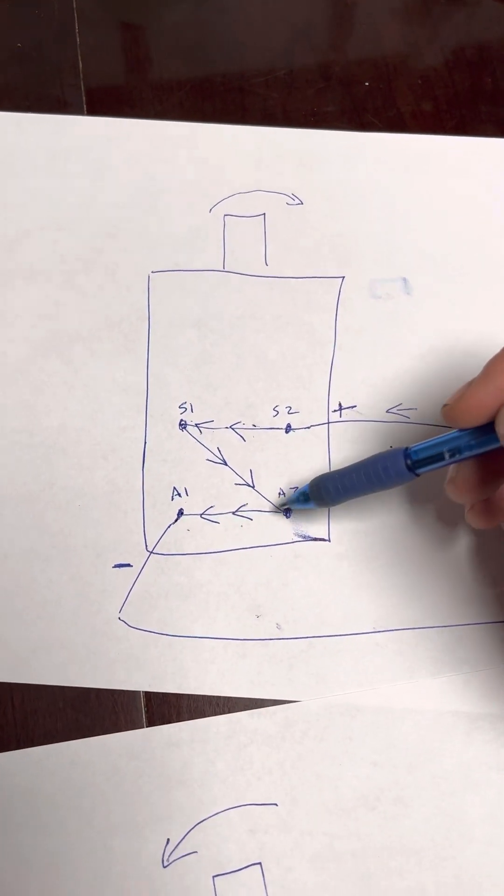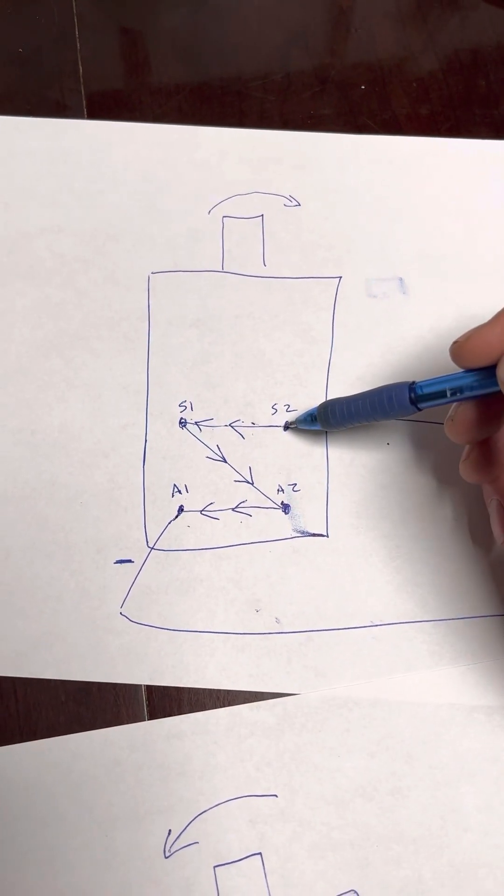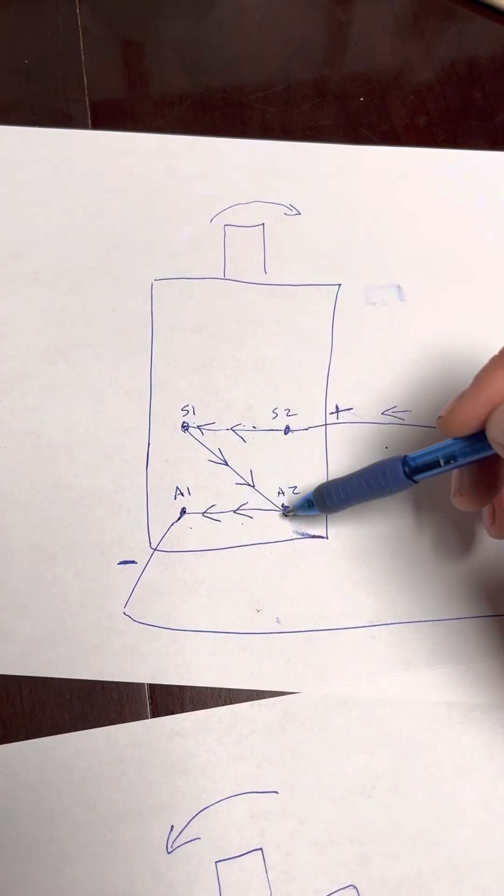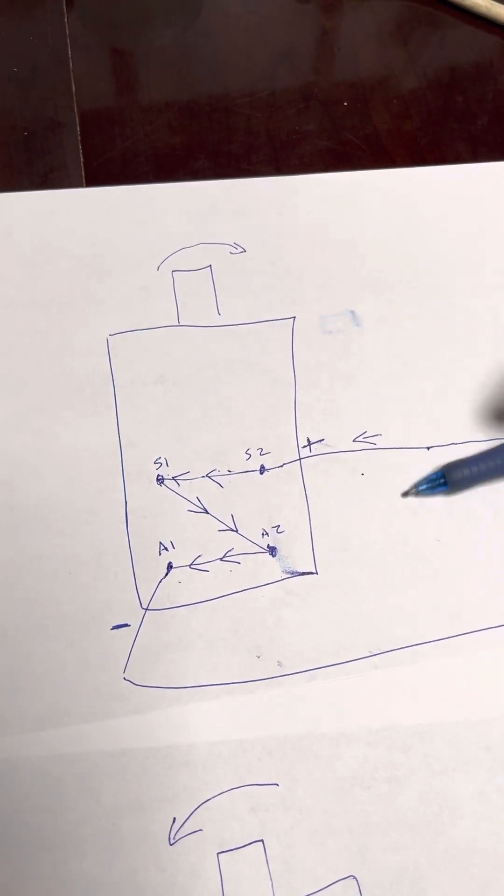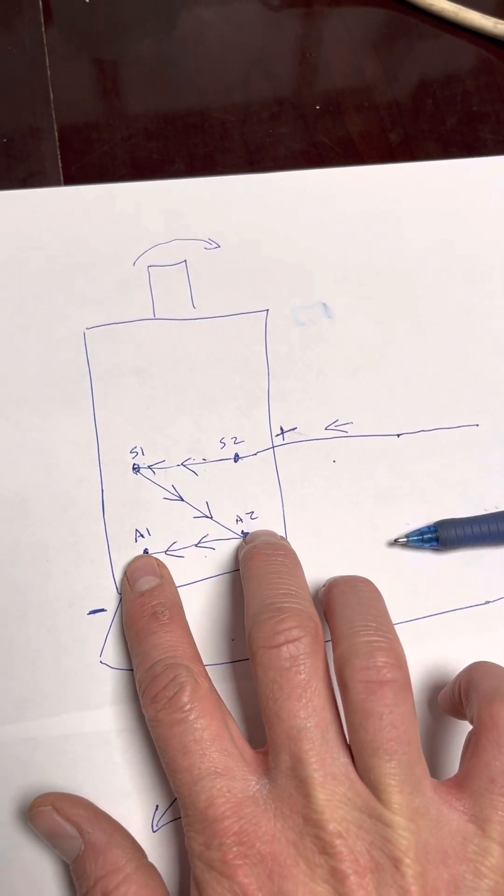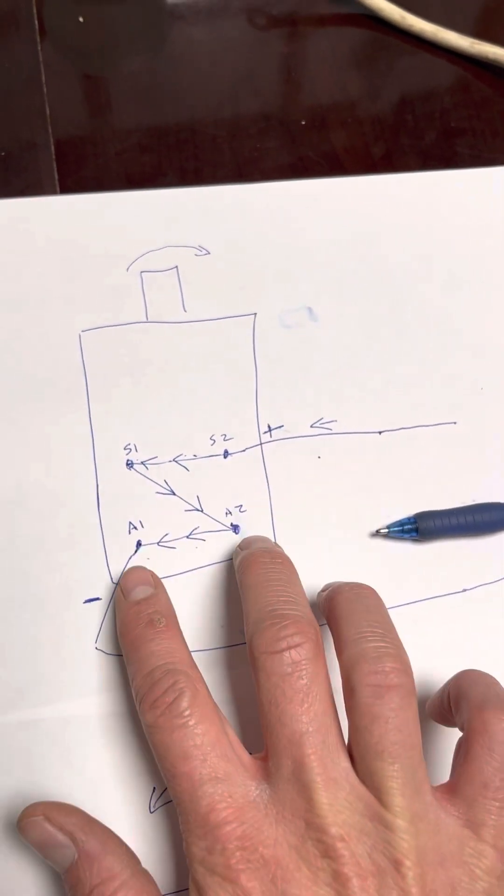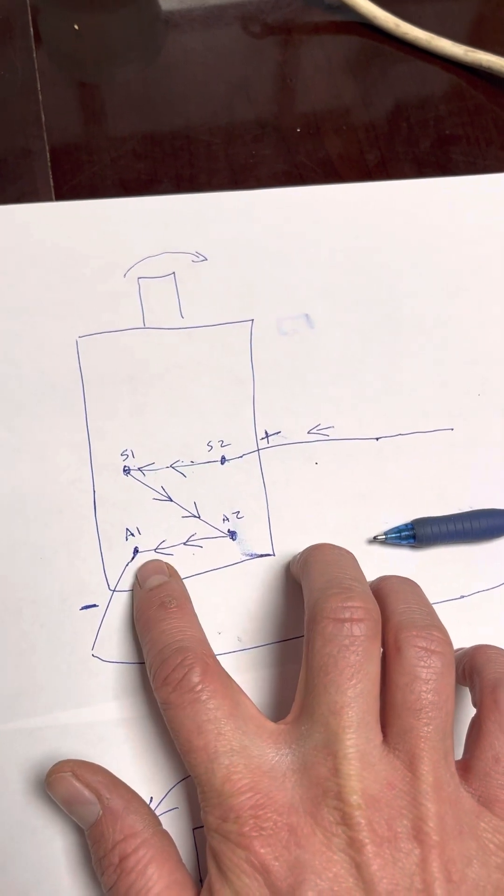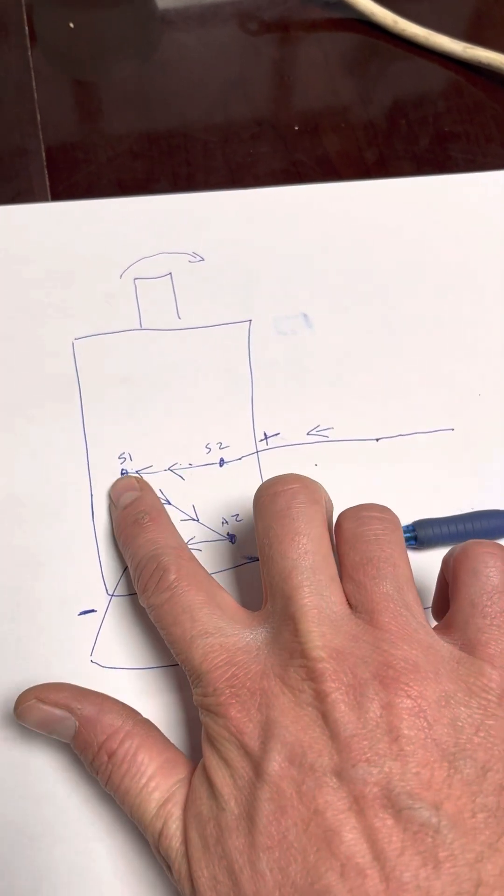So notice how both of these fields on S1, S2, A1, A2, if you look at them, the current going across the field, this would be one field. The armature is one field. The stator is one field. So the current going across them is going the same way.